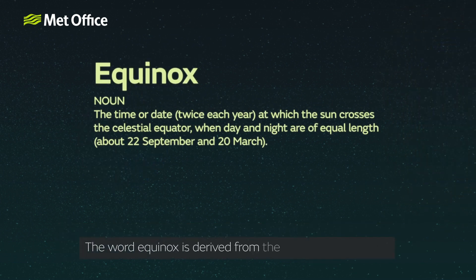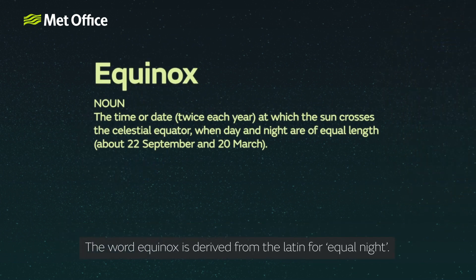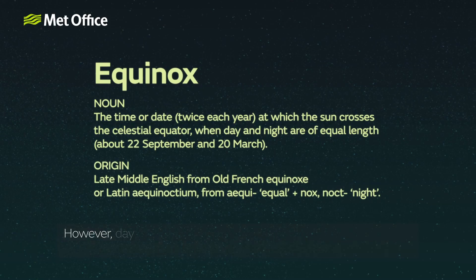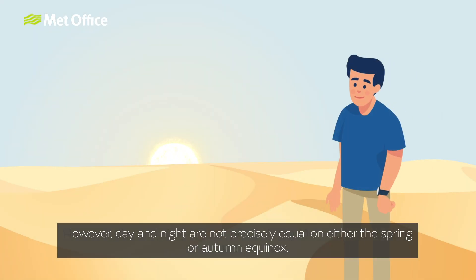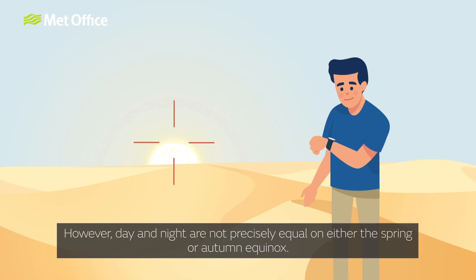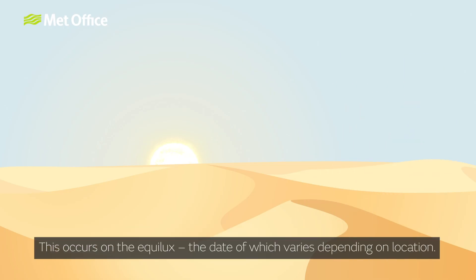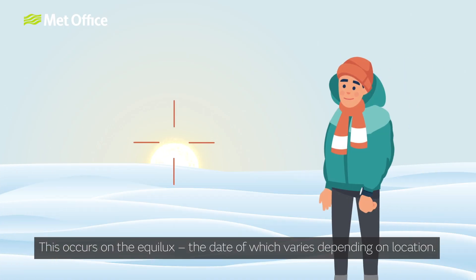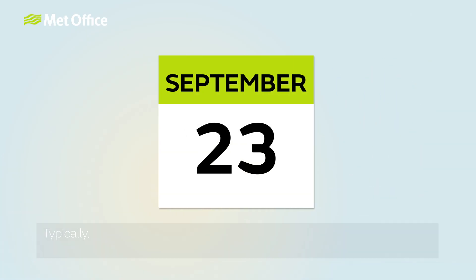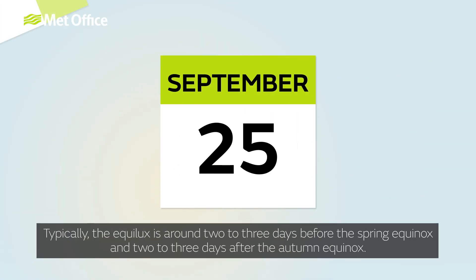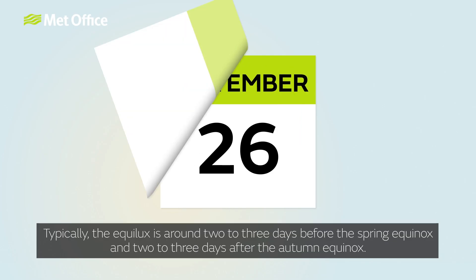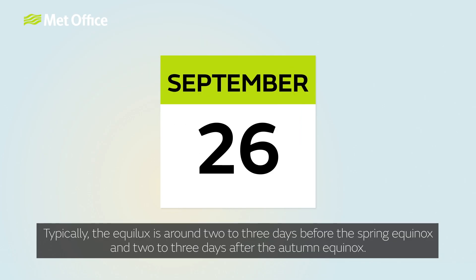The word equinox is derived from the Latin for equal night. However, day and night are not precisely equal on either the spring or autumn equinox. This occurs on the equilux, the date of which varies depending on location. Typically, the equilux is around two to three days before the spring equinox and around two to three days after the autumn equinox.